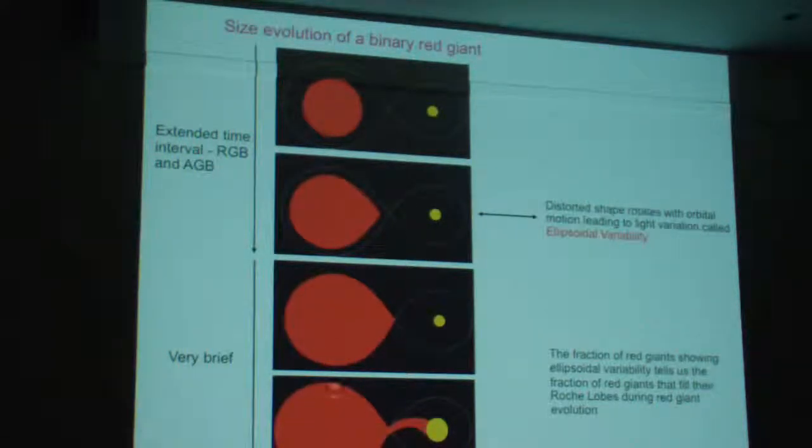Once you fill the Roche lobe, you have the common envelope event. That's very brief. You'd be extremely lucky to see that actually happen. But in this particular phase of evolution, we have something called ellipsoidal variability, caused by the red giant almost filling its Roche lobe. So it's just about to turn into a binary system that goes through the common envelope event.